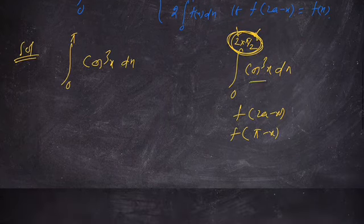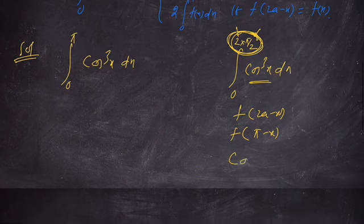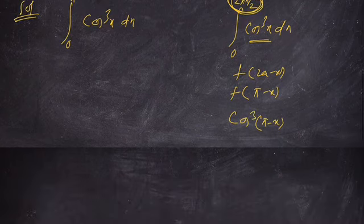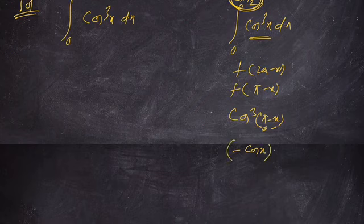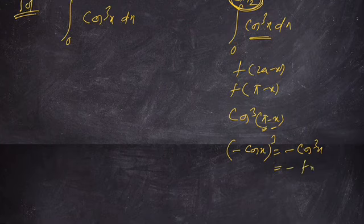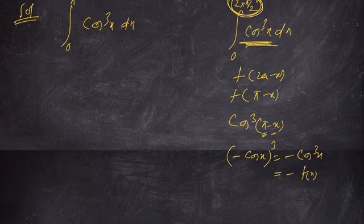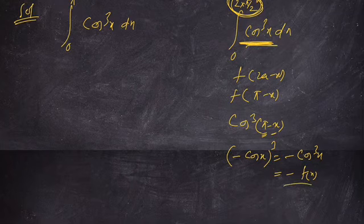The function is cos cube x. So f of pi minus x equals cos cube of pi minus x. Now cos of pi minus x equals minus cos x. So cos cube of pi minus x equals minus cos cube x. Therefore f of 2a minus x equals minus f of x.